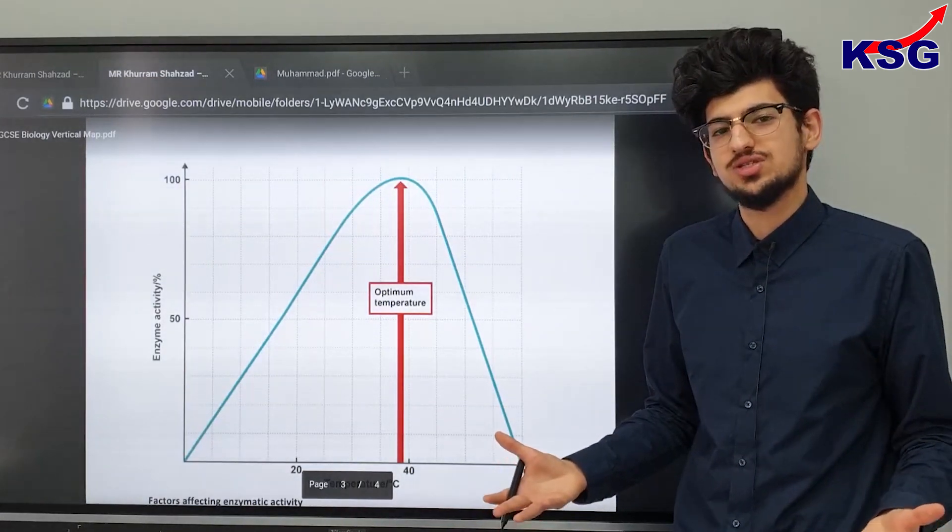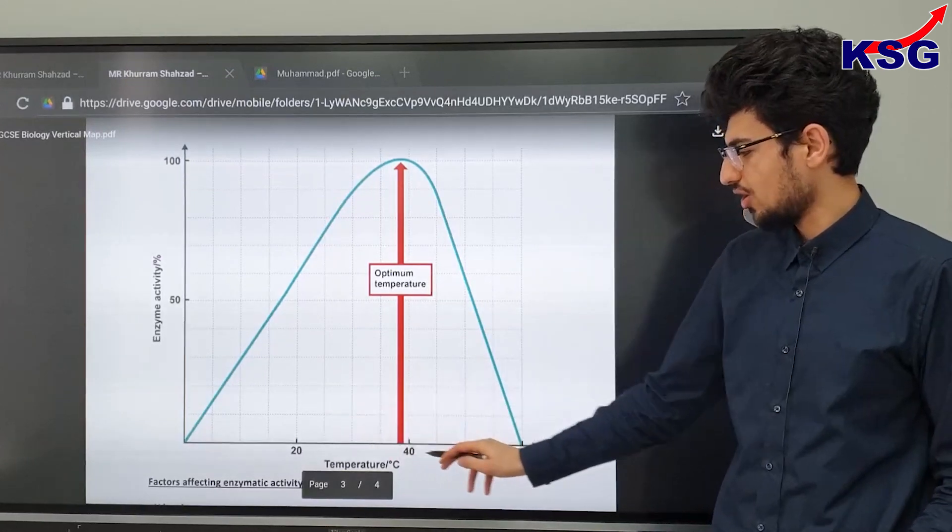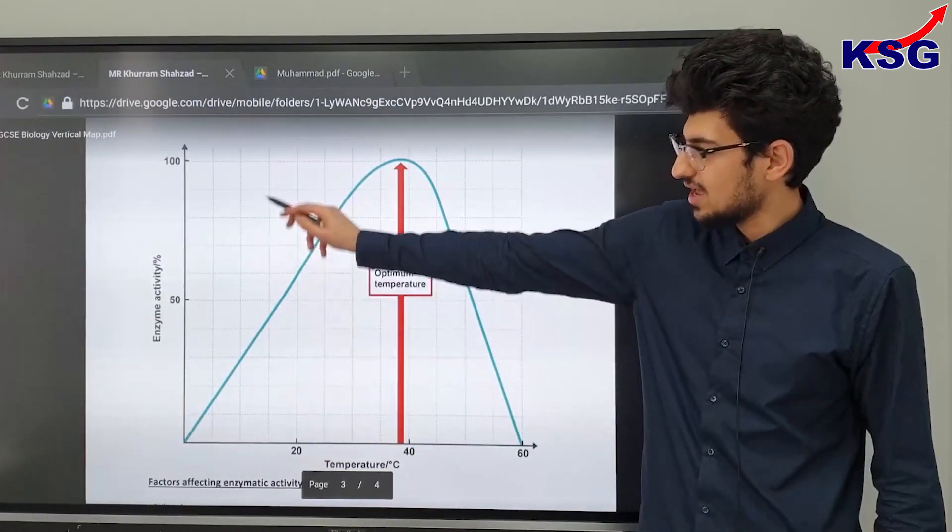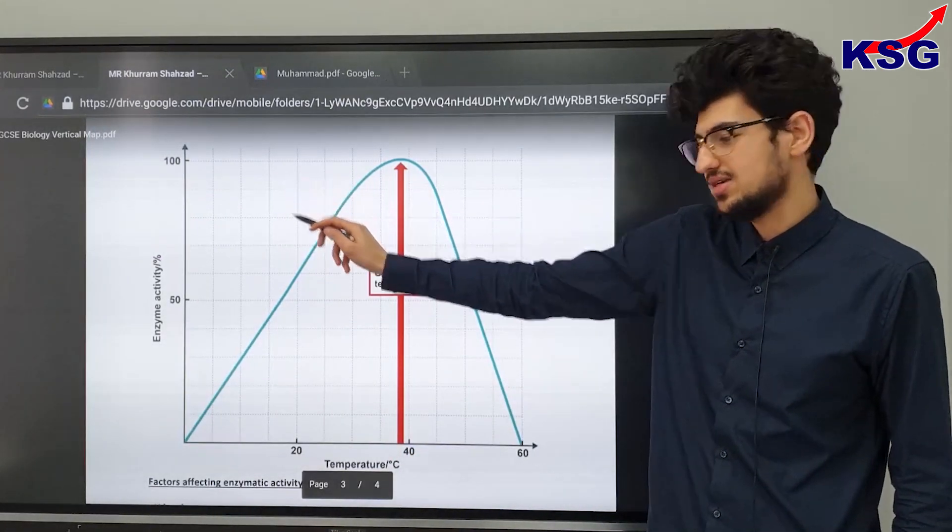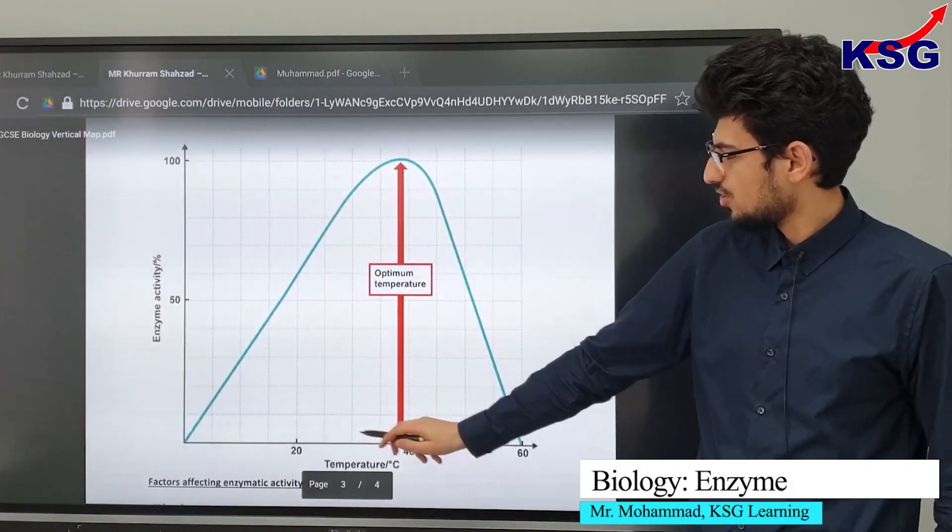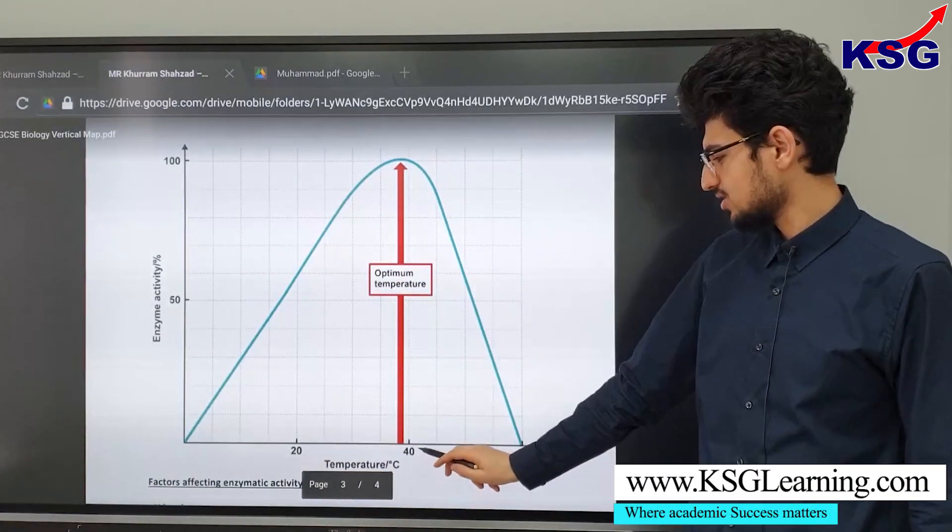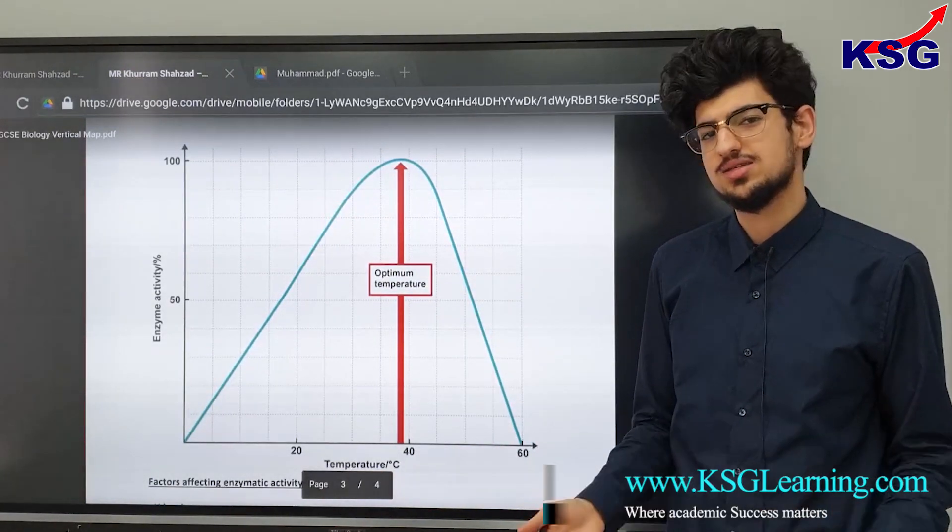So now we know why temperature increases the rate of reaction and if we look at this graph where we see that there is temperature on the x-axis and there is enzyme activity on the y-axis, as you increase the temperature up to this point the rate of reaction drastically increases. And this optimum we should remember is 37 degrees.